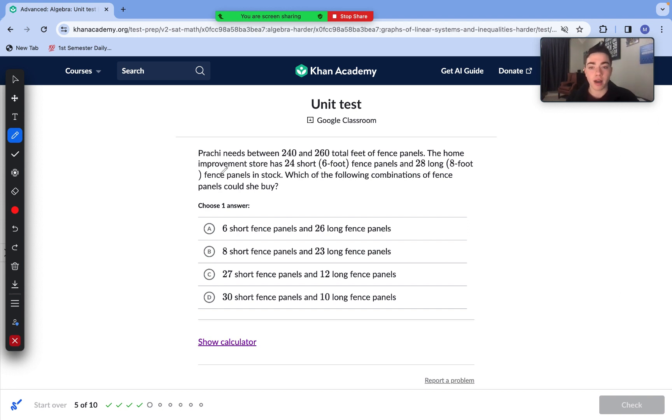Moving on to question number five. Let's read it out. Pirachi needs between 240 and 260 total feet of fence panels. The home improvement store has 24 short or 6-foot fence panels and 28 long or 8-foot fence panels in stock. Which of the following combinations of fence panels can she buy? Let's use some common sense here to eliminate some answer choices. If there's over 24 short or over 28 long fence panels in our answer, we know that it is not possible to buy that amount. So answer choice A and B pass this restriction. However, answer choice C says 27 short fence panels. There are only 24 short ones, so we can eliminate answer choice C. We can also eliminate answer choice D because 30 is greater than 24. This store does not have 30 short fence panels in stock.